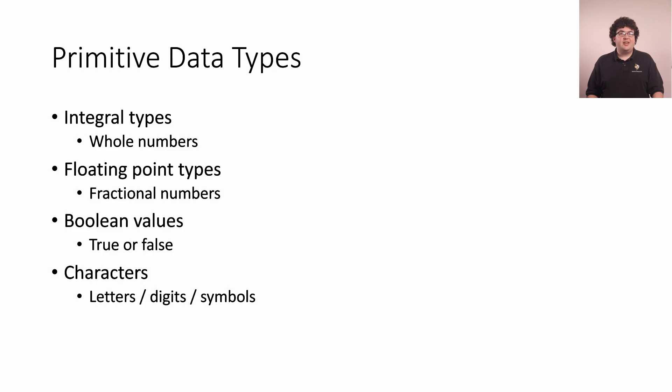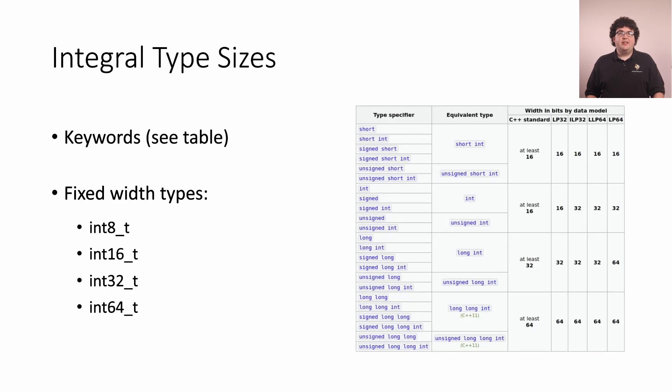These types also have sizes associated with them, which tell us how many bits are used to store that type of value in the computer's memory. For integral types, more bits means we can save bigger numbers. So while a 16-bit int maxes out at 65,536, a 32-bit int can hold numbers over 2 billion.